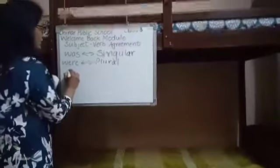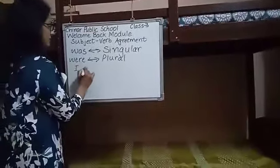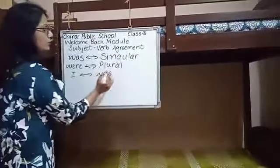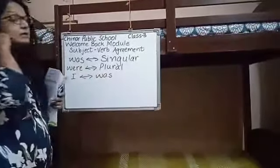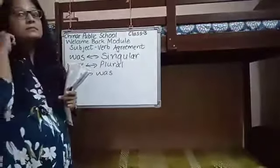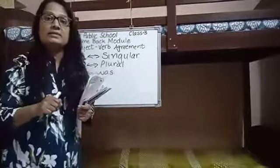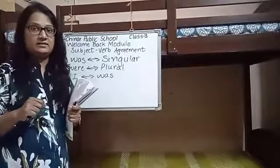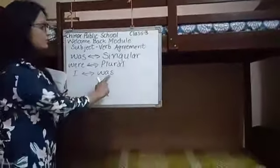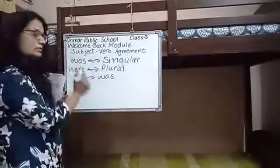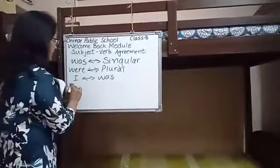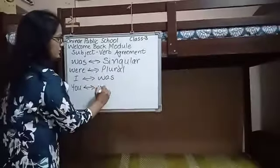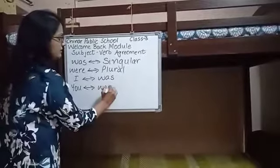With 'I', we will always use 'was'. For example, 'I was in Chinar Public School yesterday.' And with 'you', we will always use 'were'. These are the rules we need to memorize.